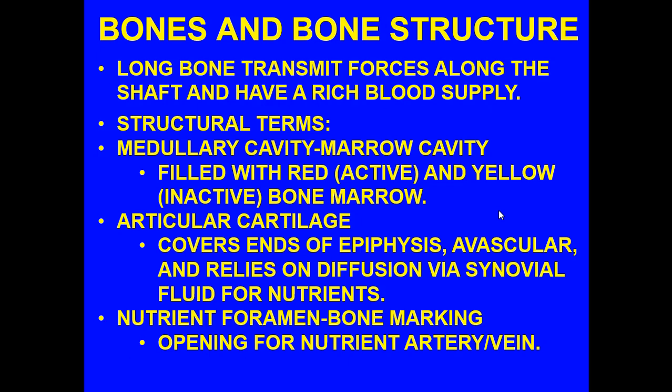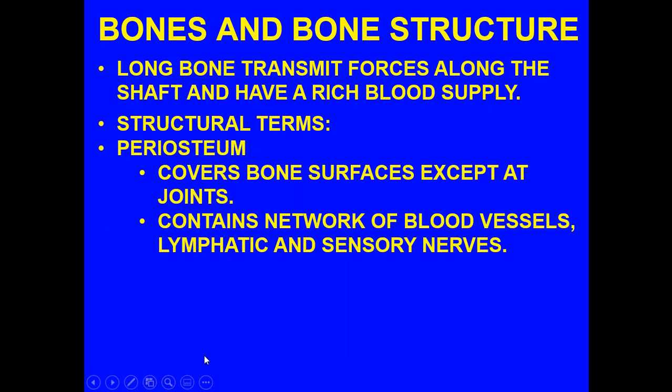Articular cartilage covers the ends of the epiphysis. It is avascular and relies on diffusion via the synovial fluid for nutrients. The nutrient foramen is a bone marking — an opening for nutrient-carrying arteries and veins. The periosteum covers the bone surfaces except at the joints, and contains a network of blood vessels, lymphatic vessels, and sensory nerves.